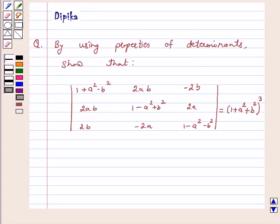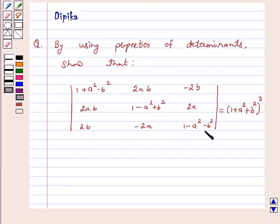Hello and welcome to the session. I am Deepika here. Let's discuss a question by using properties of determinants. Show that the determinant with entries 1+a²-b², 2ab, -2b in the first row; 2ab, 1-a²+b², 2a in the second row; 2b, -2a, 1-a²-b² in the third row is equal to (1+a²+b²)³. Let's start the solution.